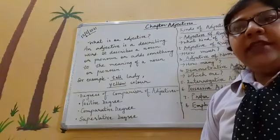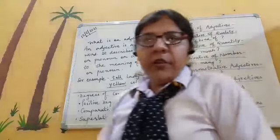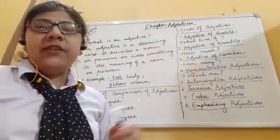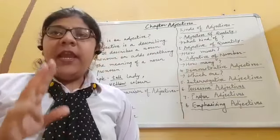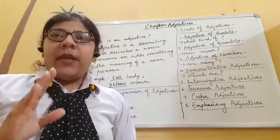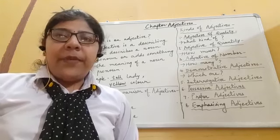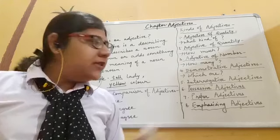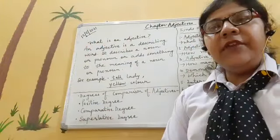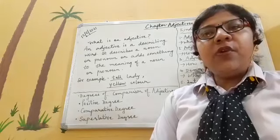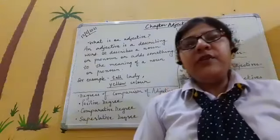Let's quickly recap what we discussed. Adjectives are describing words — they describe a noun or pronoun and add something to its meaning. The kinds of adjectives we covered are: adjective of quality, adjective of quantity, adjective of number, demonstrative adjectives, interrogative adjectives, possessive adjectives, proper adjectives, and emphasizing adjectives.